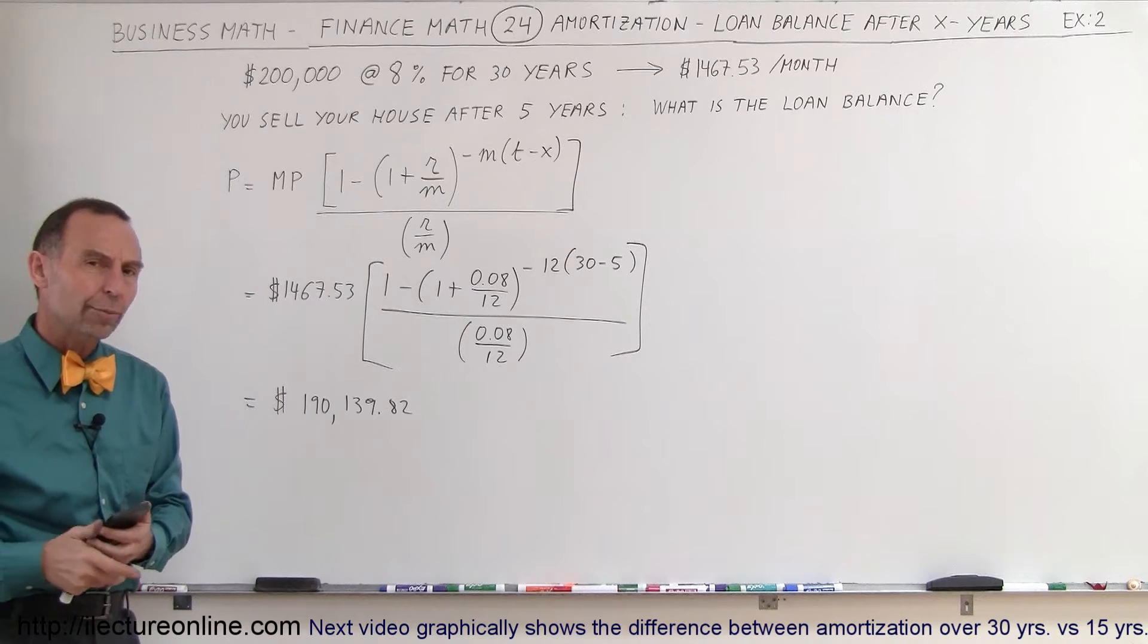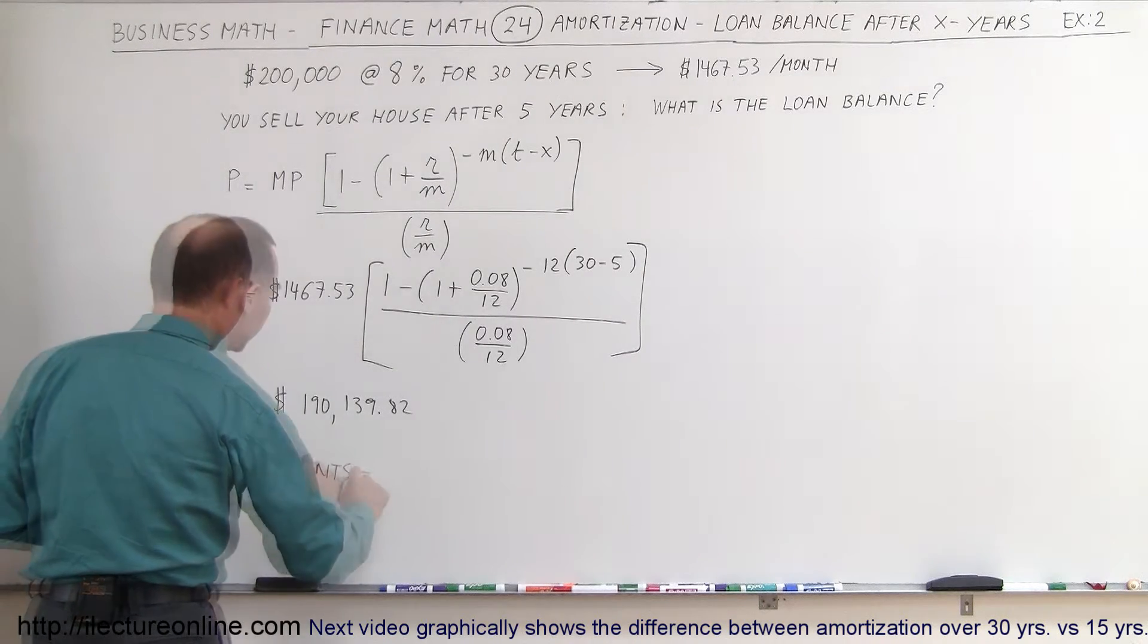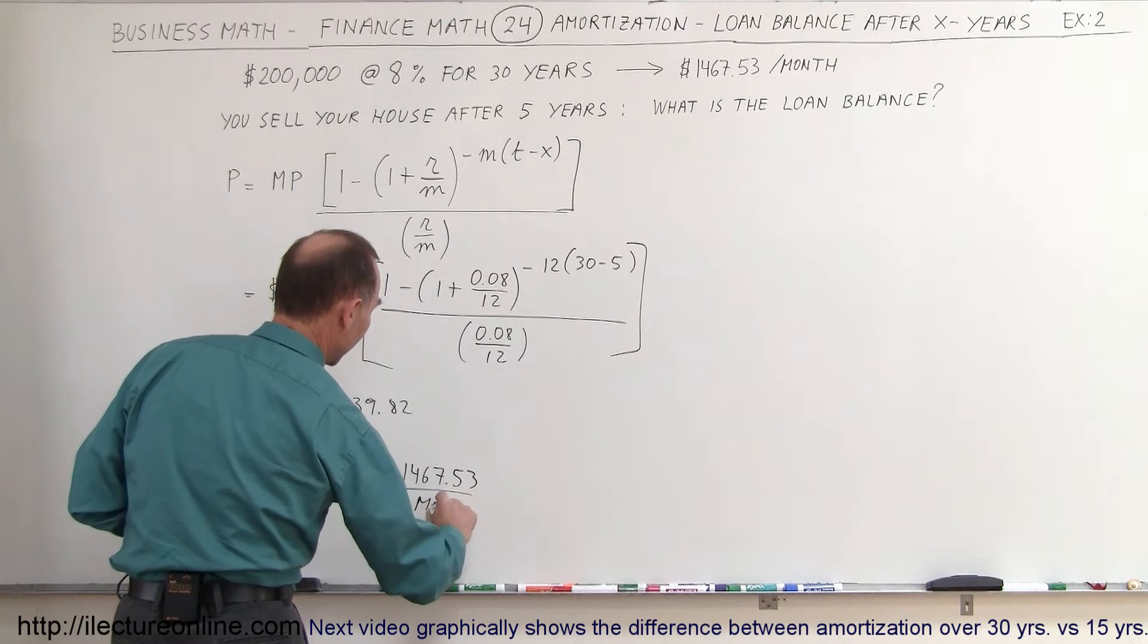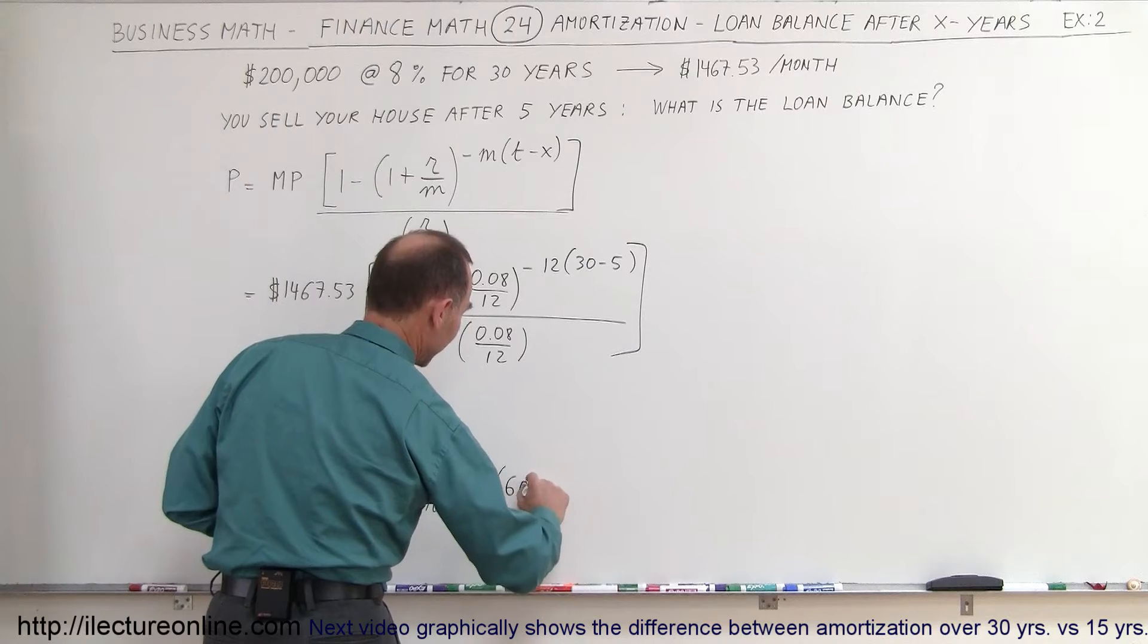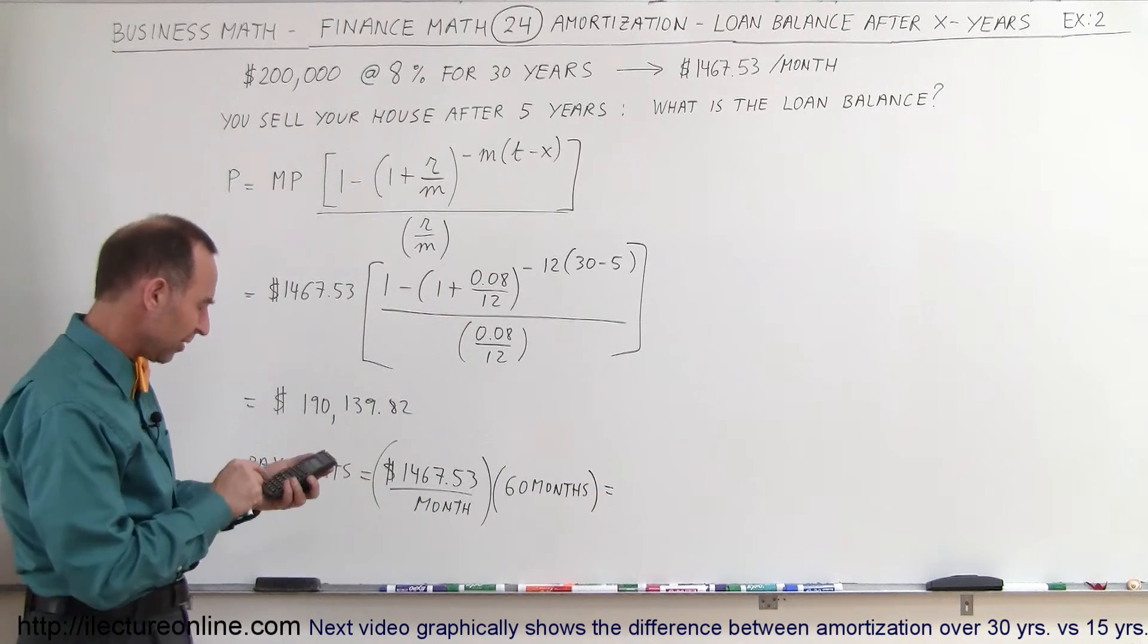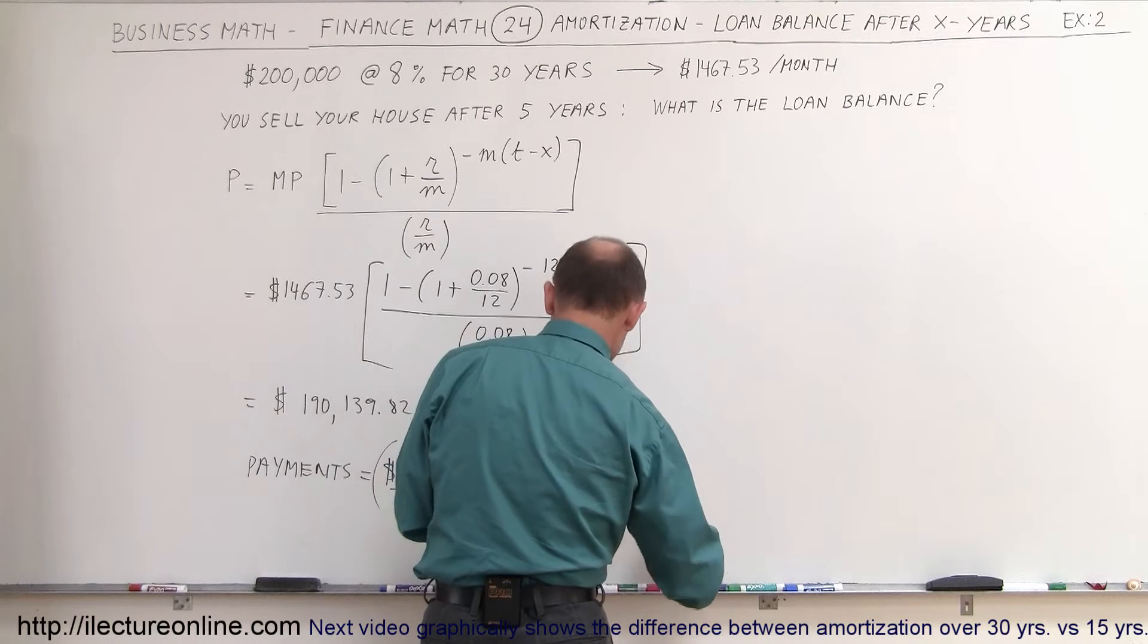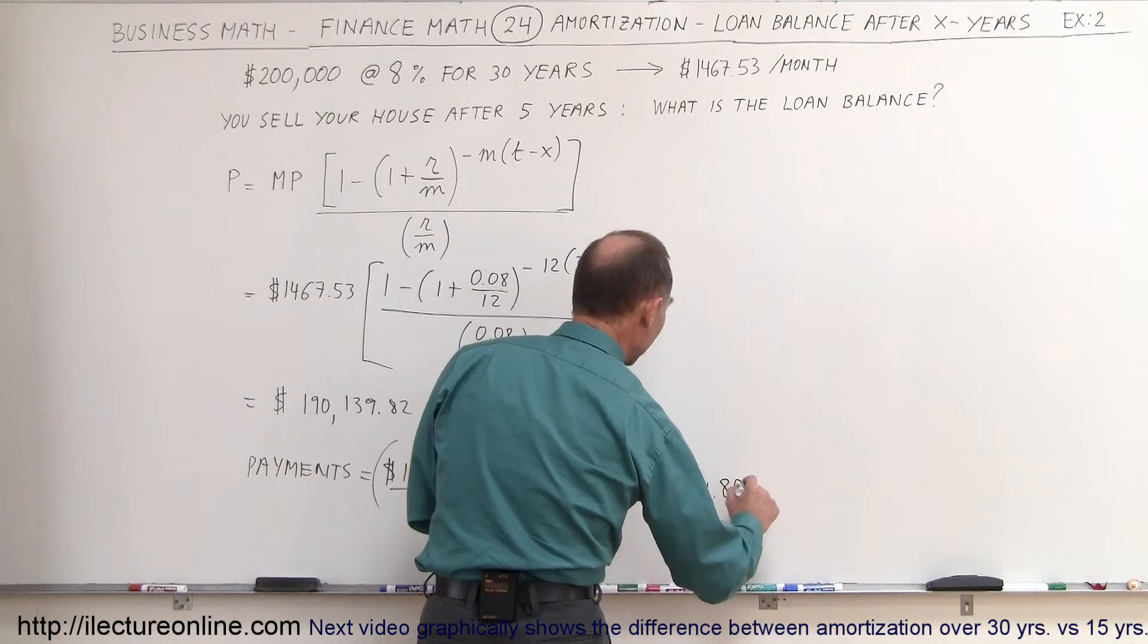Well, what were your total payments after five years? The total payments after five years will be equal to the monthly payment of $1,467.53 per month. And of course, five years is a total of 60 months. So we multiply that times 60 months. And so we get $1,467.53 times 60 equals, you will have paid the bank in the first five years a total of $88,051.80.